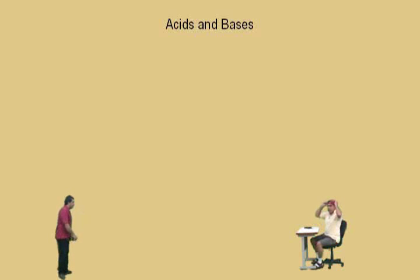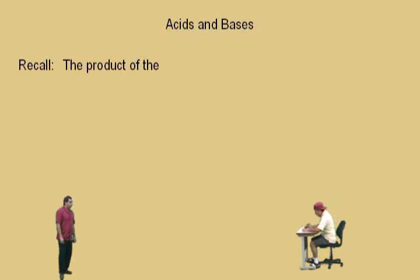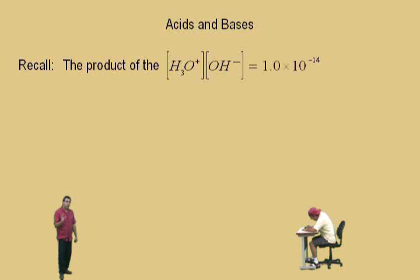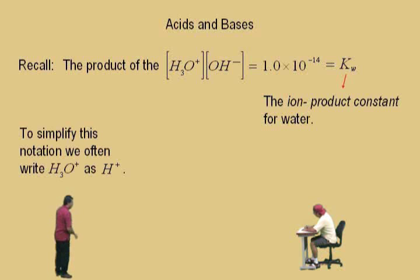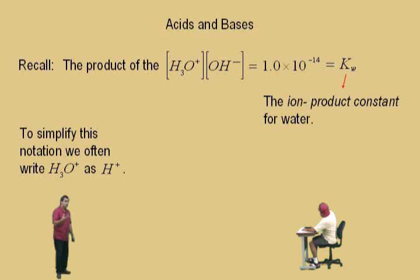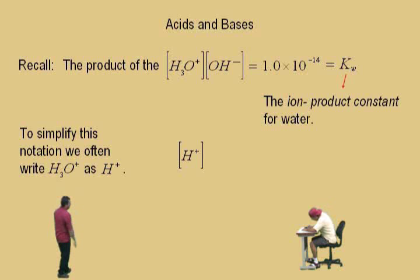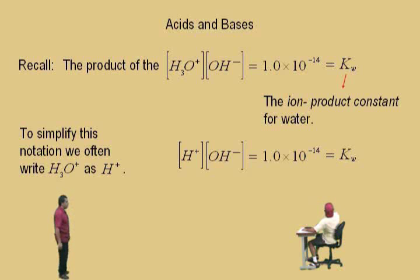Now, recall from your chemistry class that the product of the hydronium ion concentration and the hydroxide ion concentration will always equal 1.0 times 10 to the negative 14th. That was called the ion product constant for water, denoted by the variable K sub w. Often, to simplify notation, we replace H₃O⁺ with H⁺, so we say the hydrogen ion concentration times the hydroxide ion concentration equals 1.0 times 10 to the negative 14th, denoted by Kw.